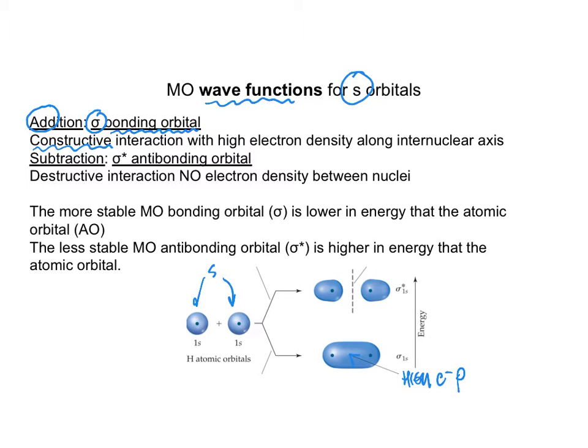We could also subtract the wave functions, and what we get is what is called a sigma star, an antibonding orbital. It is a destructive interaction, and there is no electron density. So notice the picture does not show any blue in between.